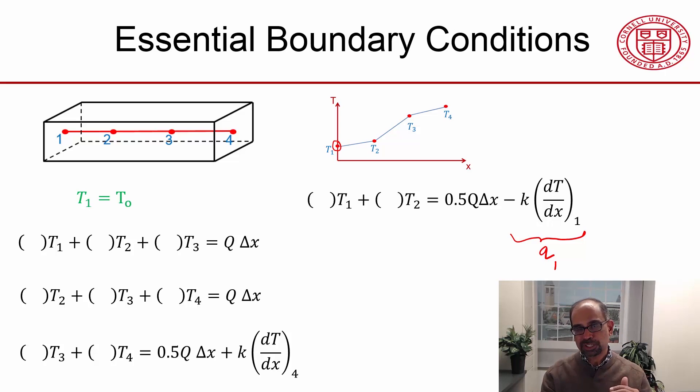The solution proceeds in three stages. In the first stage, you look at all the nodes that have essential boundary conditions on them, and you just assign the corresponding temperature value. The solver would look at this node and say there's an essential boundary condition on that node, and that value of temperature has to be T-naught. So you know that value.